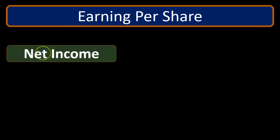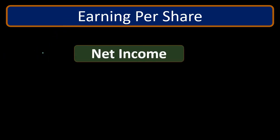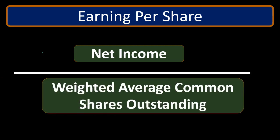Let's look at the calculation. We start with net income and then divide it by the weighted average common shares outstanding. Net income is the performance of the company.